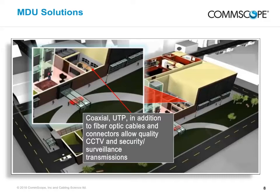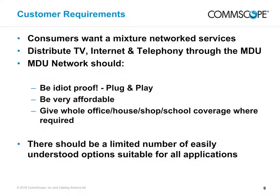Sequencers allow a single TV to see all cameras. With the use of IP-based cameras, viewing all cameras on the web is possible from anywhere. Coaxial, UTP, and fiber optic cables and connectors allow quality CCTV and security or surveillance transmissions.